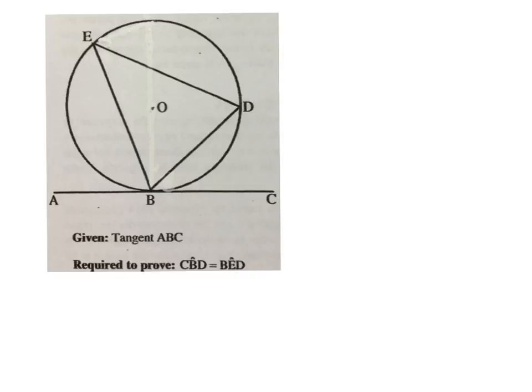This is what a question will look like if you have to prove it. They will give you this sketch and information underneath. The information will be: given a tangent ABC, so this is a tangent. You are required to prove that angle CBD is equal to BED. Now whatever comes next is what you will write. It's your proof.